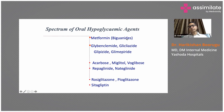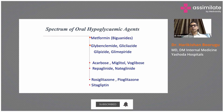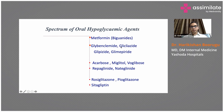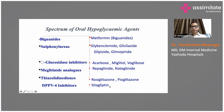Metformin is the first choice of oral antidiabetic agent in a newly diagnosed type 2 diabetes patient, unless there is a contraindication. Then sulfonylureas are available, along with alpha-glucosidase inhibitors, meglitinides, thiazolidinediones, and DPP-4 inhibitors.